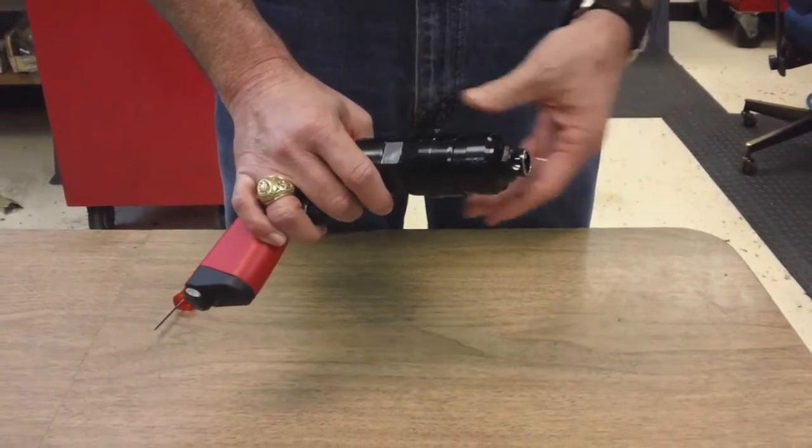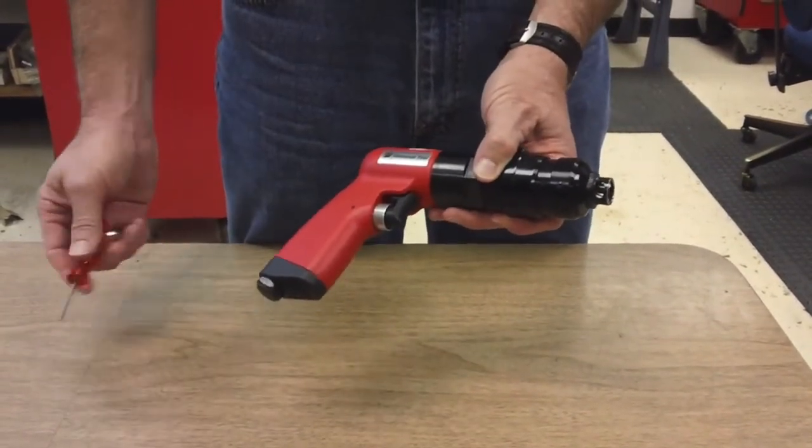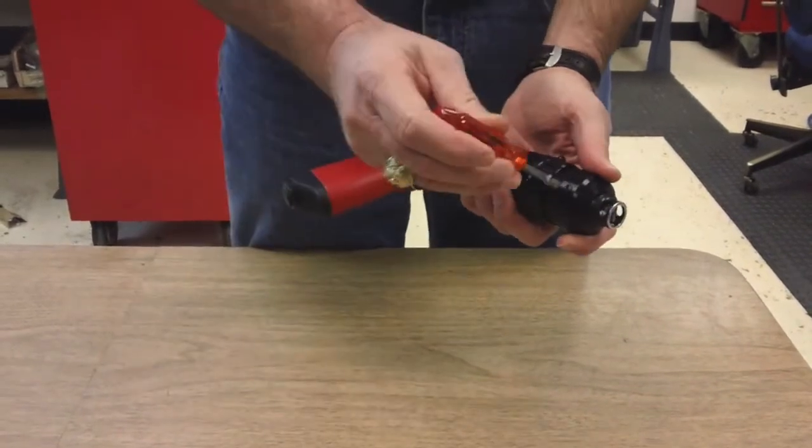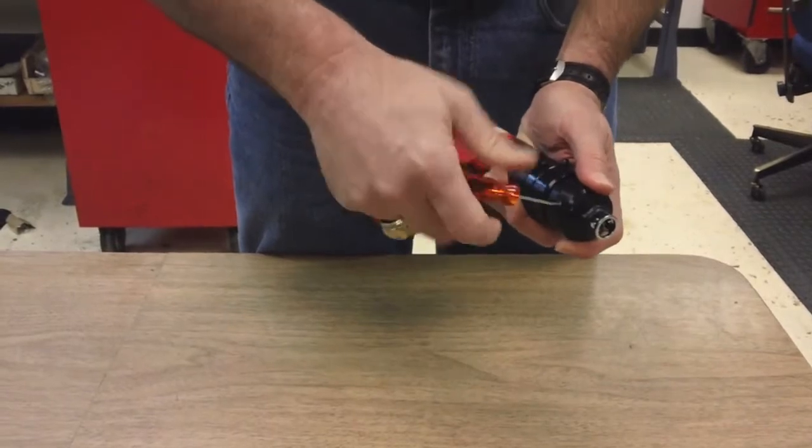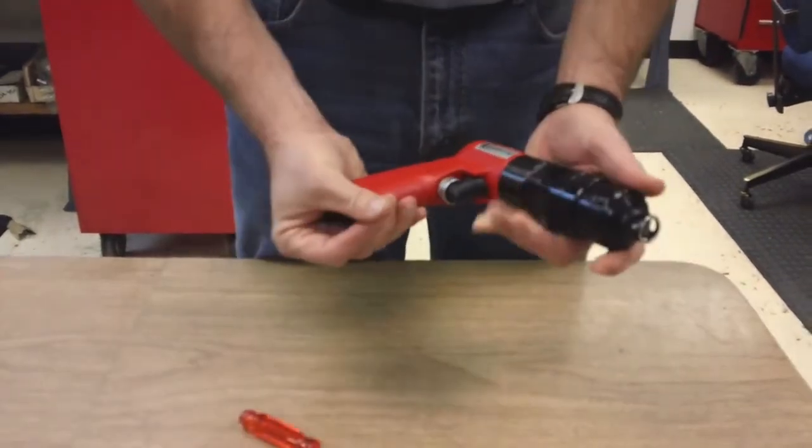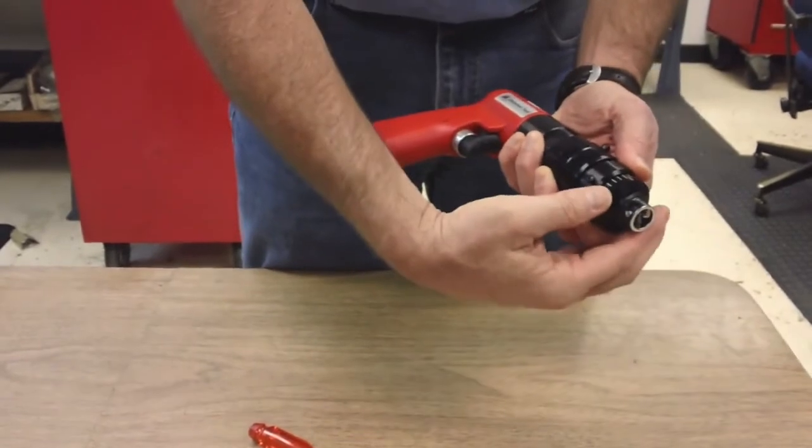How you change or adjust the shaving stop is you take a 5 64ths Allen key, and you pull this socket head cap screw, loosen it, and that allows you to reveal the graduations.